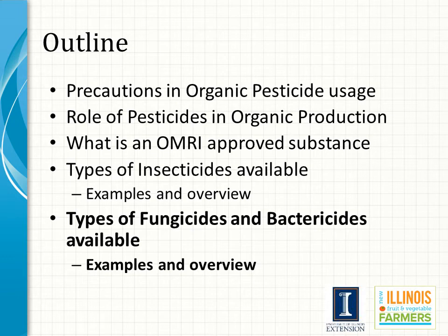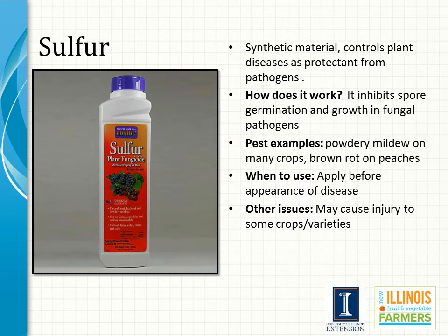We now move into the last section, which covers the types of fungicides and bactericides that are available. Sulfur is a synthetic material that controls disease as a protectant from plant pathogens. It works by inhibiting spore germination and growth of fungal pathogens. Sulfur can target powdery mildew on many crops and brown rot on peaches. Sulfur is a preventative pesticide and must be applied before the appearance of the disease for the season.